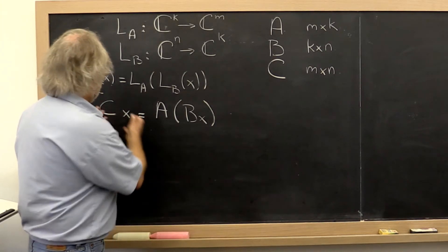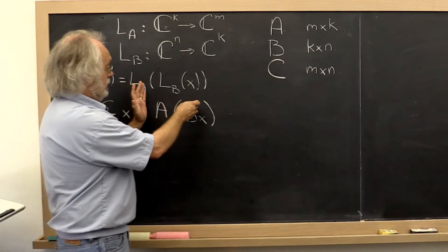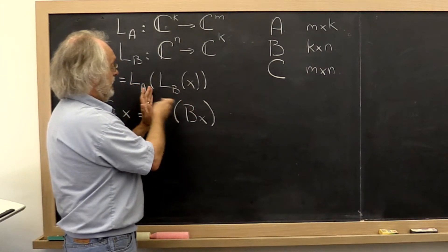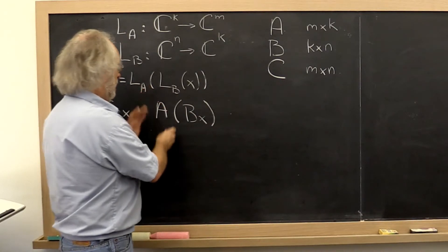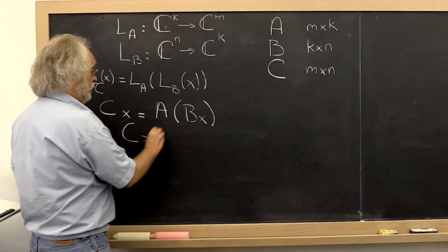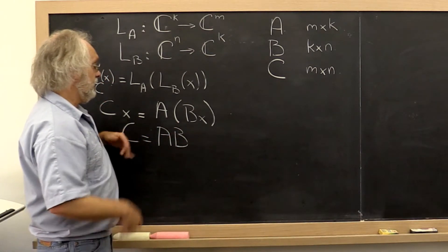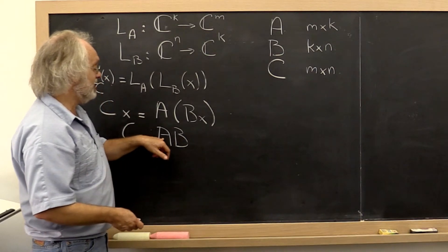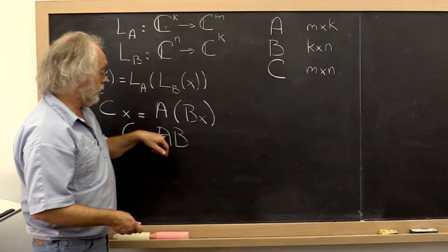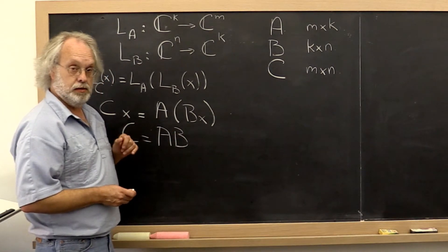Now you can say C is the matrix that represents the result of first applying B and then applying A. And therefore we can say let's define C equal to A times B, where C is the matrix that captures the net result of composing A and B.